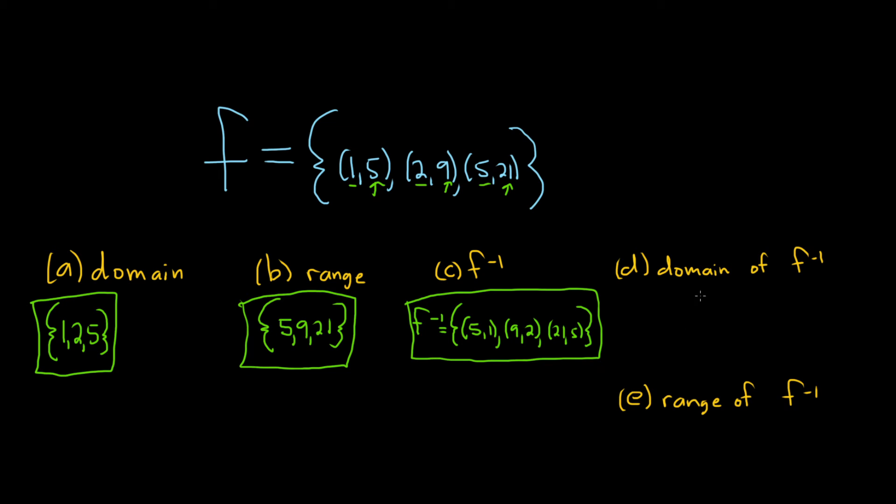So because we swapped x and y-coordinates, this is really cool. The domain of f inverse should be the range of f. Let's check. So let's look here at f inverse and write down the domain. So it's the x values: 5, 9, 21. And this should be the range of f. And yep, it certainly is. So a function and its inverse swap domain and range. This is a really good example. Even though it's simple, it shows you that exactly happens.